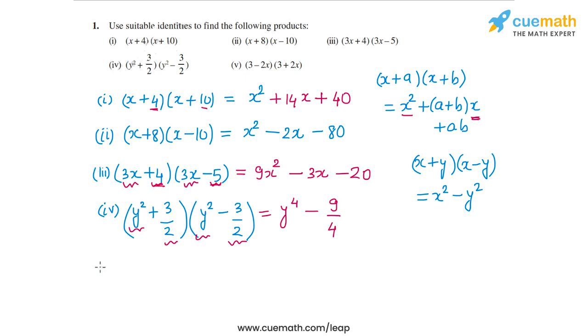In the fifth part, I have (3-2x)(3+2x). So again, this is of the form (x+y)(x-y). So in this case, the product will be 3². So that's 9 minus (2x)². So that's 4x². So this is the product in the fifth part.